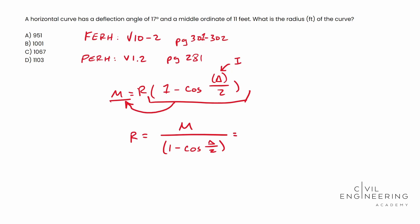So whenever we plug in our knowns, now we have 11 feet as our middle ordinate that's given to us in a problem right there. We're going to bring that over one minus the cosine of Delta. Remember Delta is your deflection angle or intersection angle. Depends on which manual you're in or handbook rather. This is going to be 17 degrees and we're going to put that over two. So when you plug all of this in, you end up with 1,001 feet.